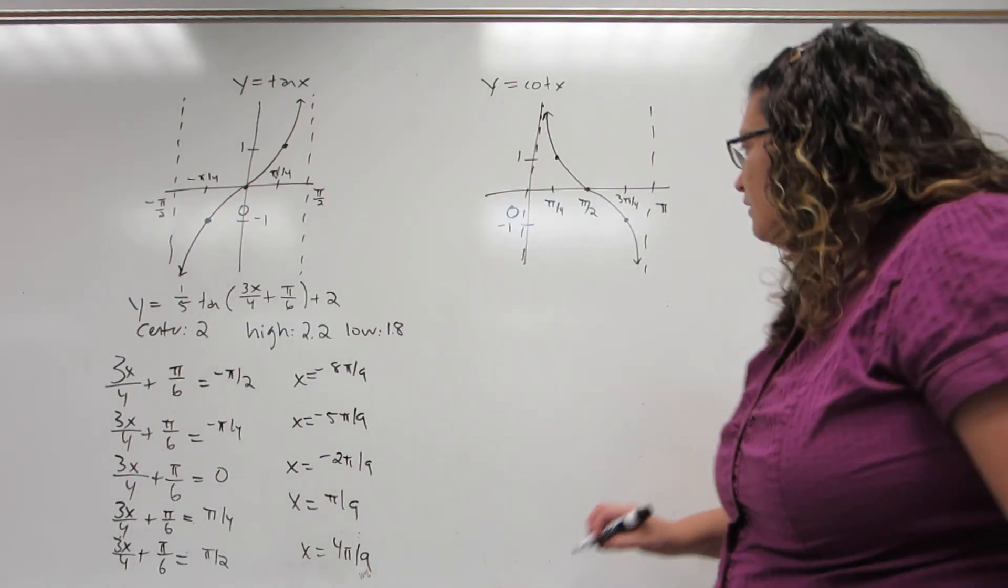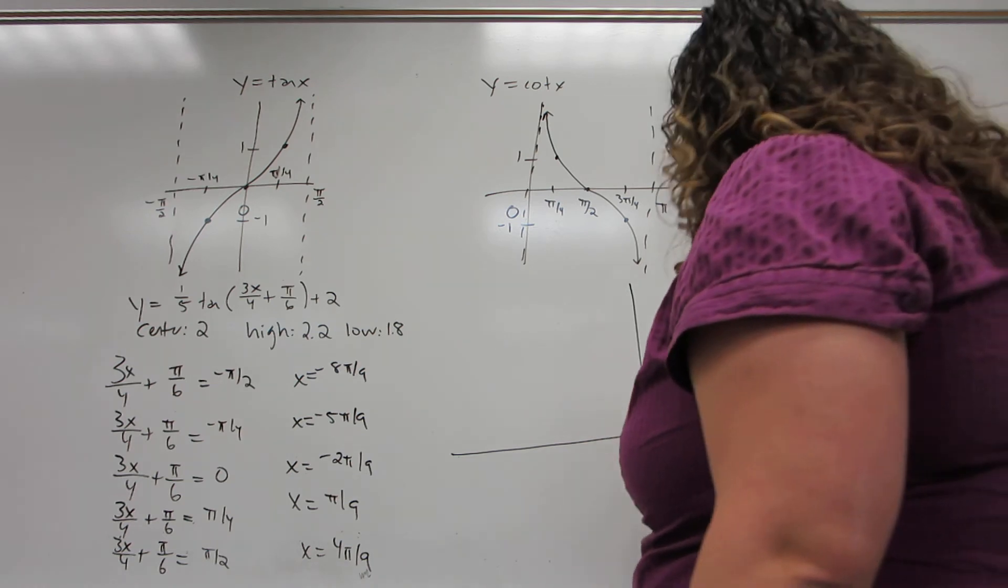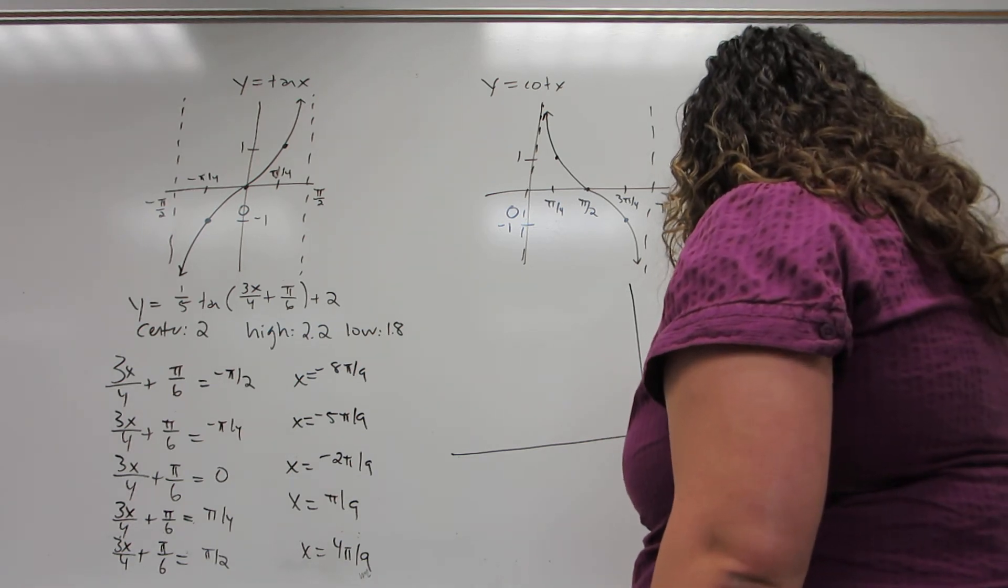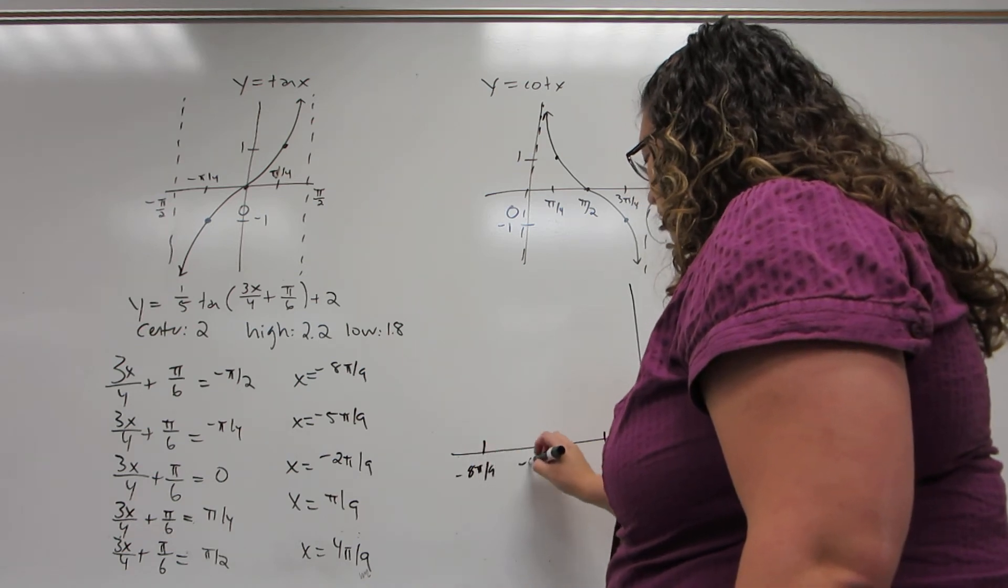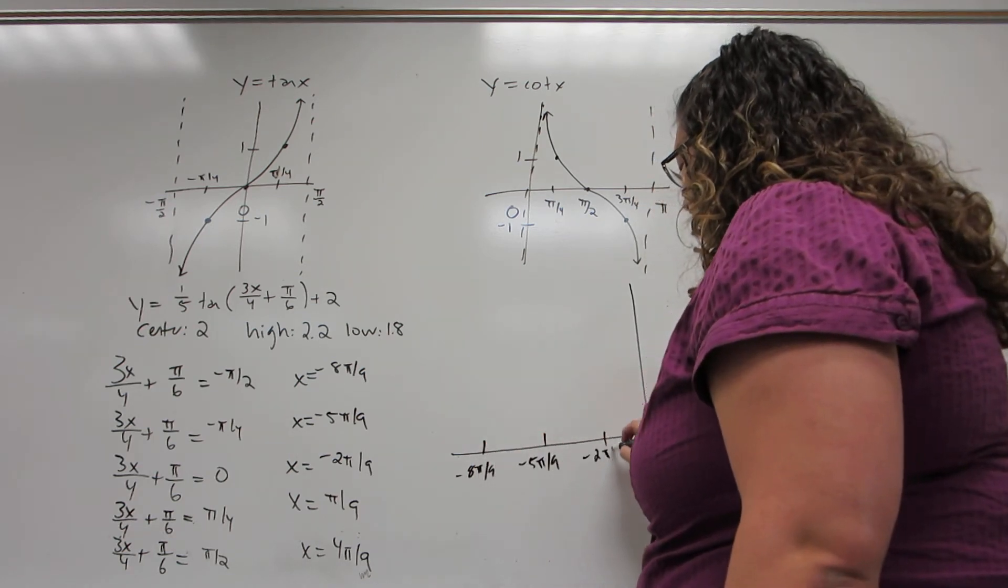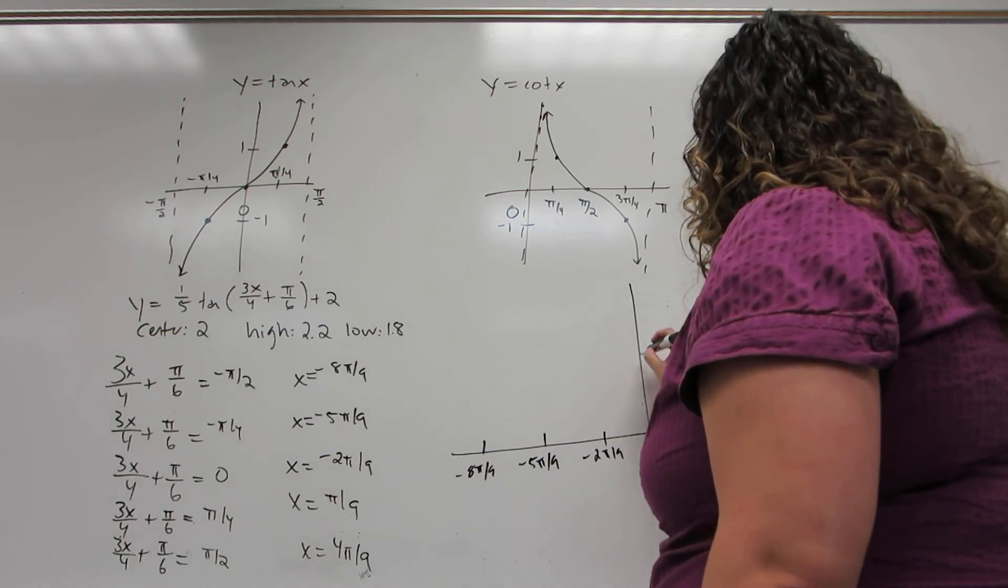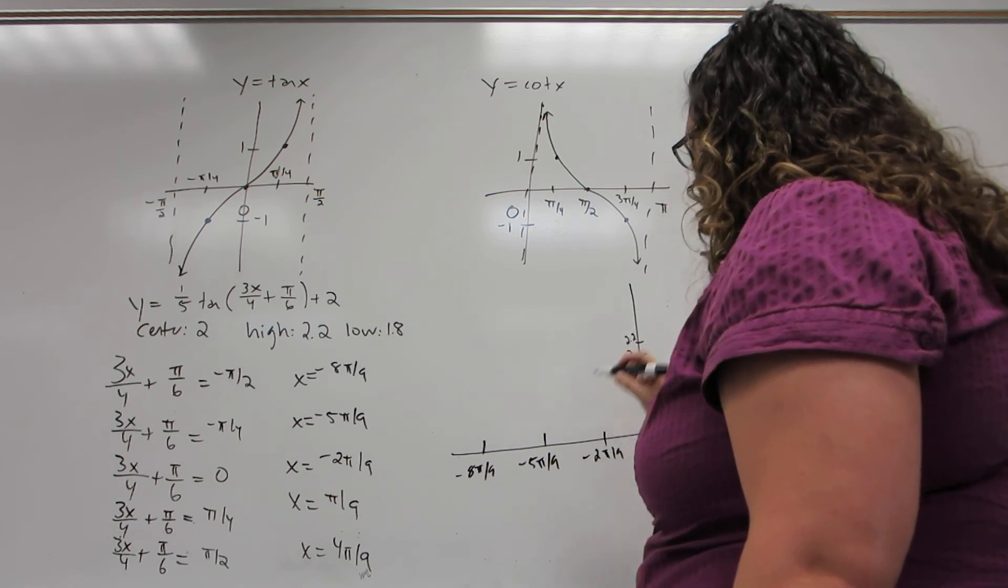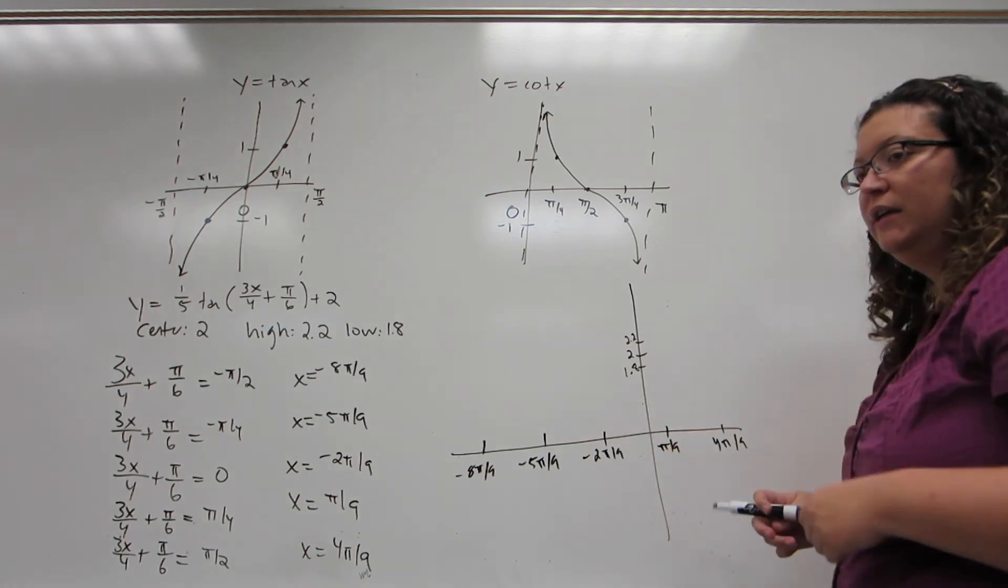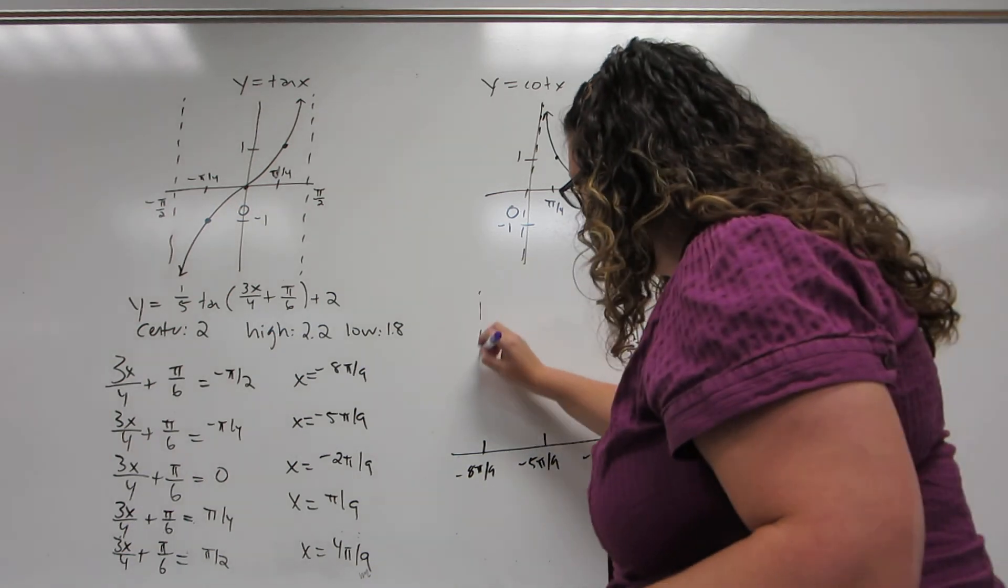So now I'm going to set up my axes. Label my x-coordinates. Label my y-coordinates. Now, because I'm drawing tangent, I'm going to need asymptotes. And the asymptotes are always where the first and the last special point are.